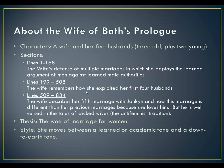On that note, I'd like you to look closely this week at the Wife of Bath's Tale and Prologue — I want you to really pay attention to it, because we're going to be talking about it in our discussion forum. The characters in the prologue are a wife and her five husbands. She had three old husbands and then two young husbands. The sections I really want you to pay attention to are lines 1 through 168, where the wife gives her defense of multiple marriages, in which she deploys the learned argument of men against learned male authorities.